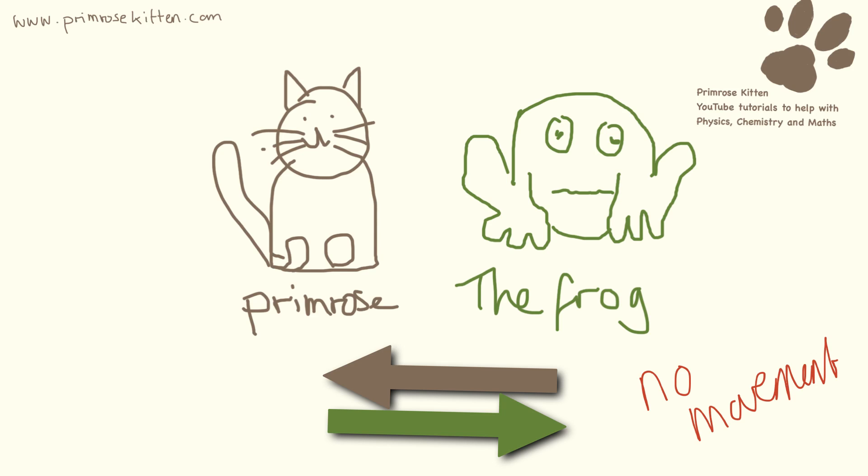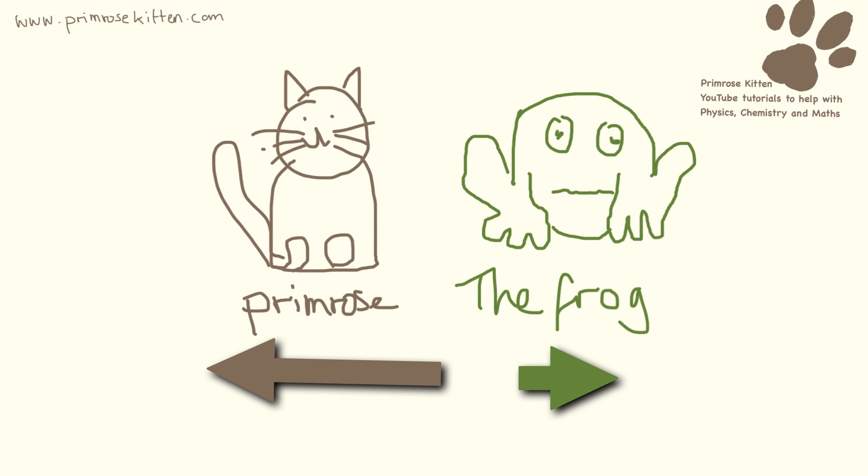Which is great because it means I don't get a frog in the face. Now, these arrows could apply to Primrose and the frog or they could apply to a car. So this could be the driving force in a car. This could be the braking force in a car.